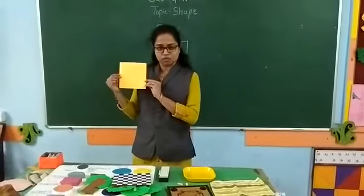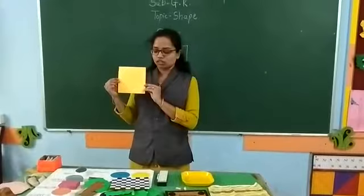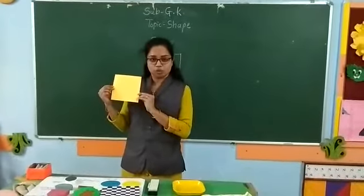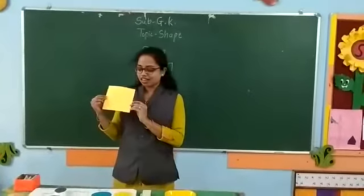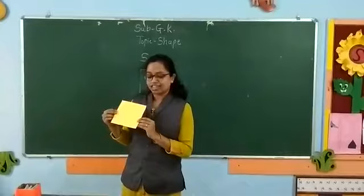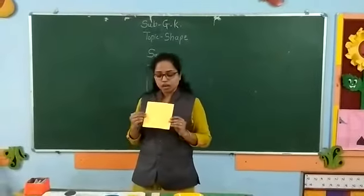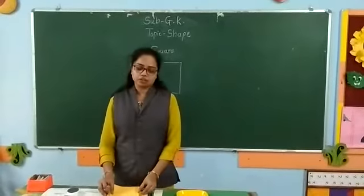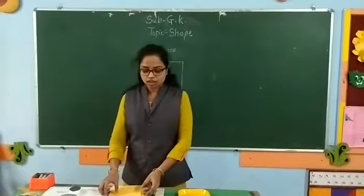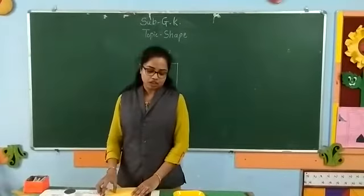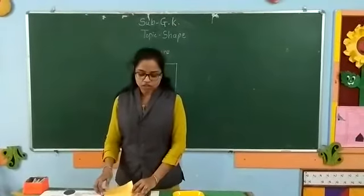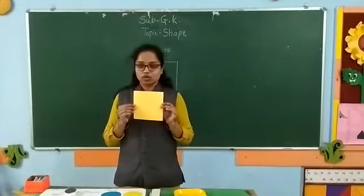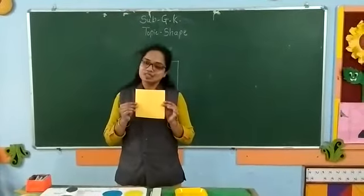Does it look like a balloon? No. Then, does it look like a box? Yes, it looks like a box. But children, as you all have a name, this shape also has a name. And this shape is called a square. What is it called? A square.